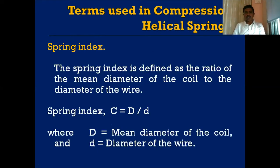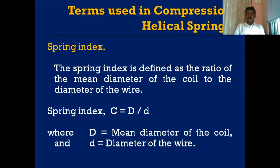The third and most important parameter is the spring index. It is defined as the ratio of the diameter of the coil to the diameter of the wire. If capital D is the diameter of the coil and small d is the diameter of the wire, then the spring index C = D/d. This is an important parameter in the design of a compression helical spring.